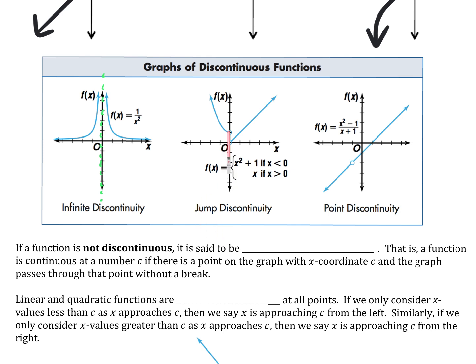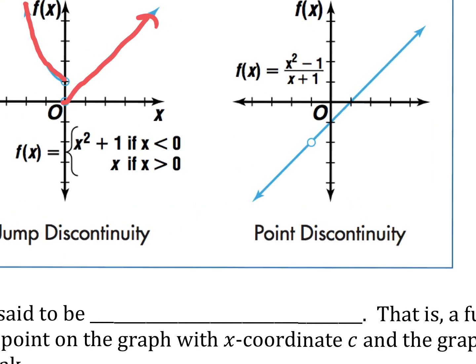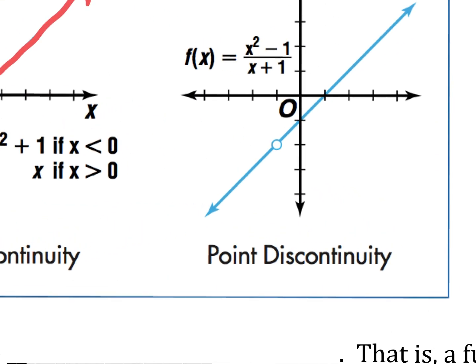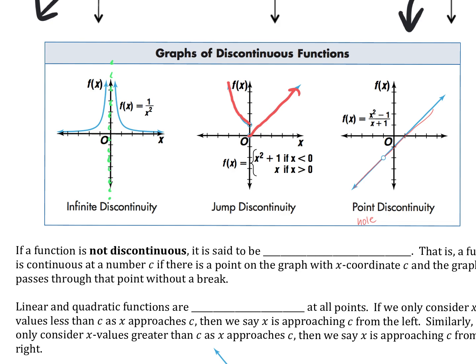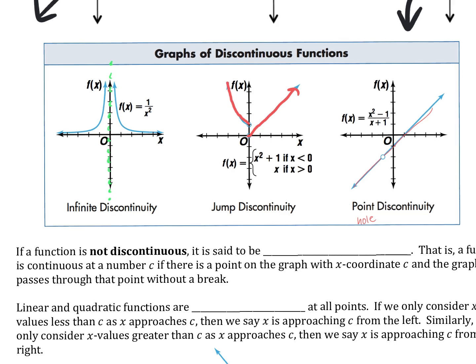Why do you think this one's called jump? If I were to follow this graph, it's like la-dee-dee, la-dee-dee, jump. That one's called jump discontinuity. And then this one — why do you think it's called point? There's just a little point or a little hole that is a discontinuity. So we've got infinite, jump, and point.